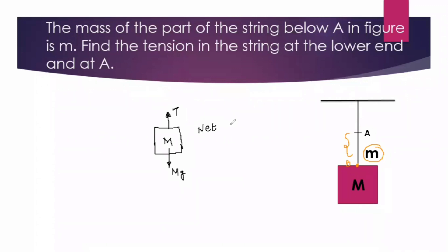Since the net acceleration of the block is zero, therefore forces are balanced. Hence the upward force is equal to downward force. What is our upward force? Upward force is tension. Downward force is Mg.